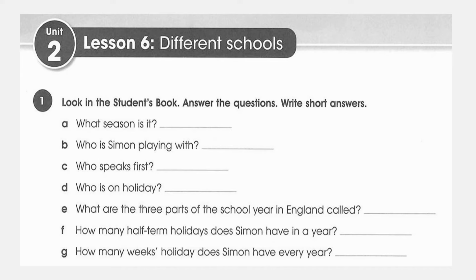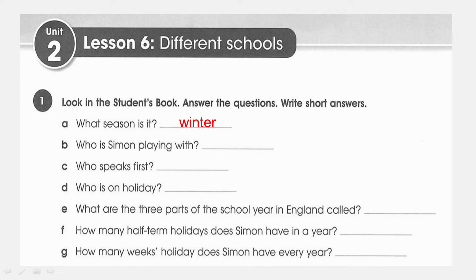Now we move to the activity book — Lesson 6, Different Schools, Exercise One. Look in the student's book and answer the questions. Write short answers. Look at the text and answer the questions related to the passage with short answers — meaning answers proportional to the question. Question: What season is it? The season is winter — because December was mentioned and December is winter. Some of these questions will require inference.